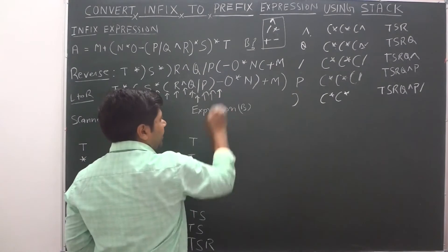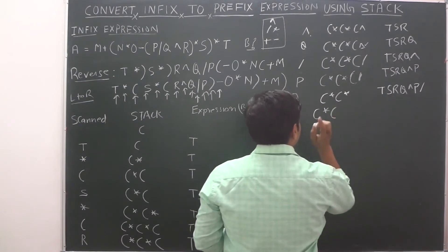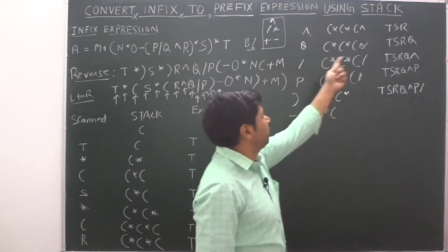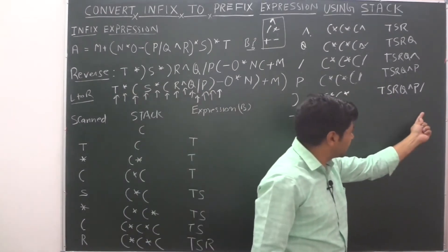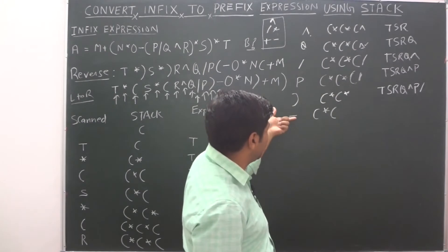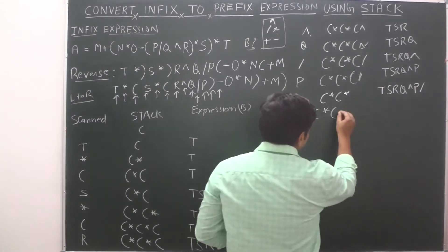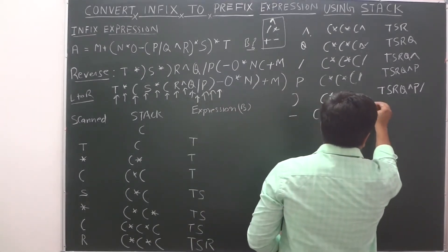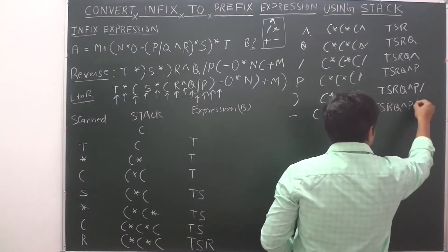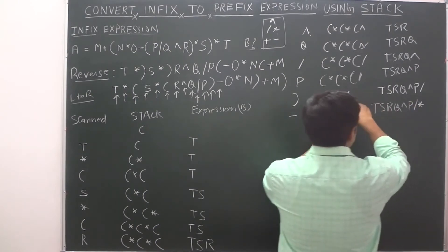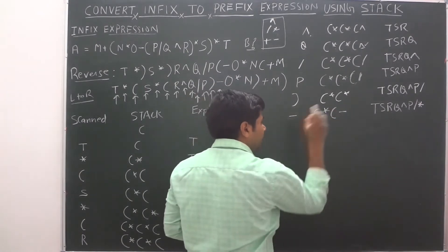Next element is minus (negative). For minus, we apply the same precedence rules. Minus has lower precedence than star, so star gets added to the expression and minus is pushed onto the stack. Expression becomes T, S, R, Q, exponential, P, division, star. Minus operator is now on top of the stack.